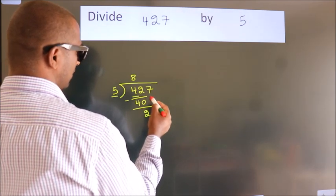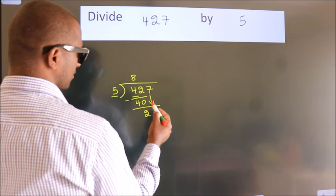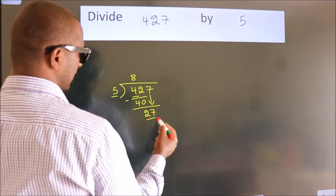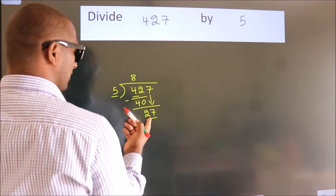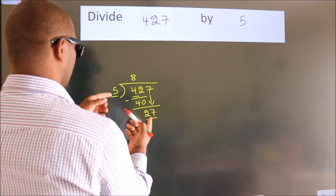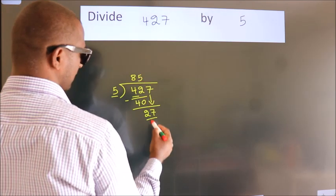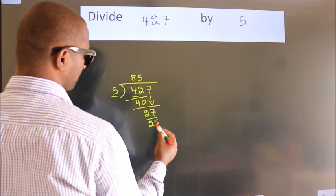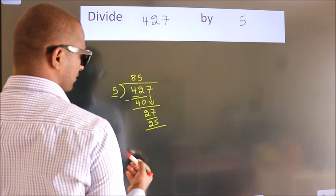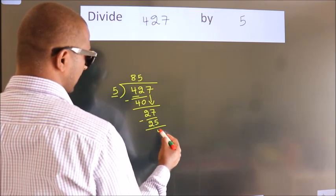After this, bring down the next number. So 7 down, giving us 27. A number close to 27 in the 5 table is 5 times 5, 25. Now we subtract. We get 2.